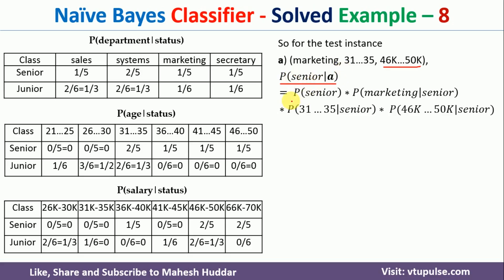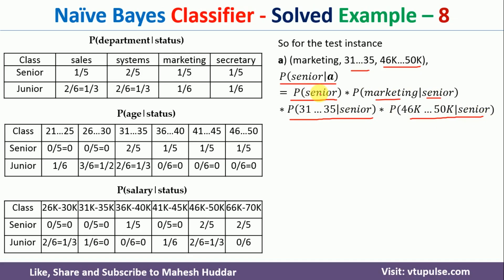Probability of senior given A equals probability of senior, multiplied by probability of marketing given senior, multiplied by probability of 31-35 given senior, multiplied by probability of 46k to 50k given senior. Substituting: 5/11 × 1/5 × 2/5 × 2/5. Solving this gives 0.0145.